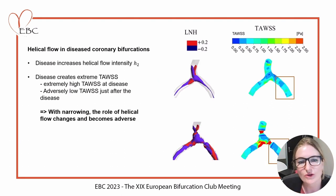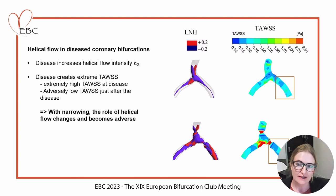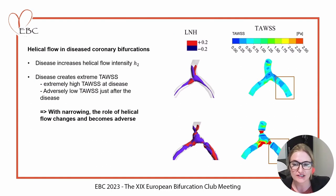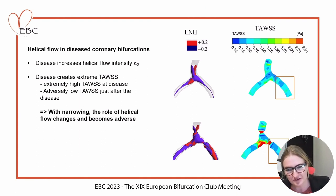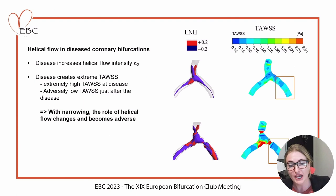Looking at how this changes once the coronary bifurcations are diseased: once the same artery is diseased, we see a significant increase of extreme time-average wall shear stress, which is unfavorable. Right after the bifurcation, the very extreme low time-average wall shear stress also increases quite significantly down the daughter branch, meaning that with excessive narrowing — in this case 70% stenosis — the role of helical flow actually changes and becomes adverse.